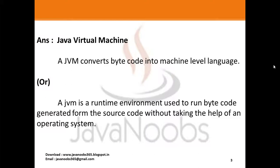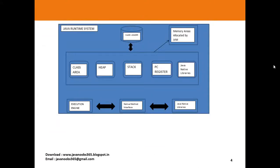Another definition for Java Virtual Machine: it is a runtime environment used to run bytecodes generated from the source code, without taking the help of an operating system. What JVM does is it converts the bytecodes generated from the source code into machine level language. Here is the diagram of the Java runtime system.